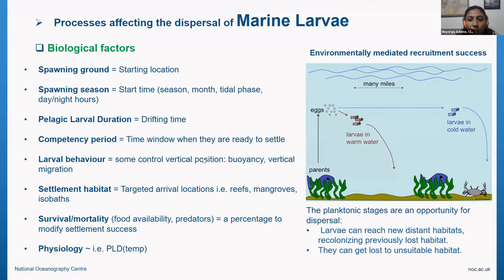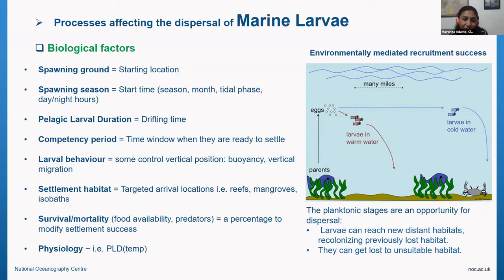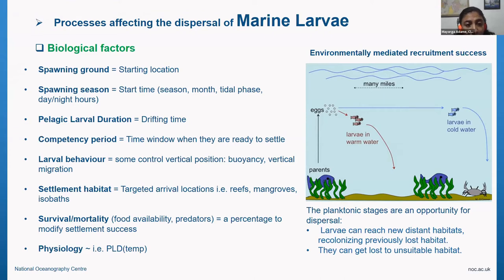Pelagic larval duration is your drifting time — the time for the larva to mature while it's drifting. The competency period is the time window when they are ready to settle and actively looking for settlement habitat, which will be the target arrival location — either reefs, mangroves, or some specific isobath depth. And of course, larval behavior gives them some control of vertical position, mainly. They can be buoyant or have vertical migration — either diel, going up and down every day, or ontogenetic, having depth preferences through their larval development.